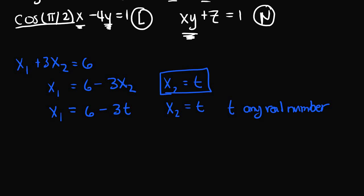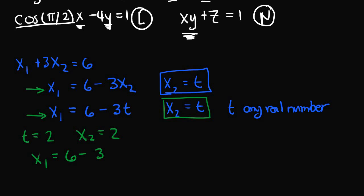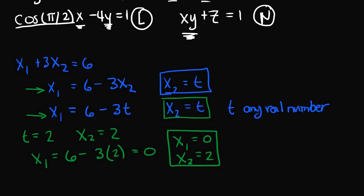To find a particular solution, we set t equal to some numeric value and solve for x1 and x2. If we set t equal to 2, then x2 is equal to 2. Plugging t into the equation, x1 is equal to 6 minus 3 times 2 — that's 6 minus 6, which is 0. So our particular solution is x1 = 0 and x2 = 2.